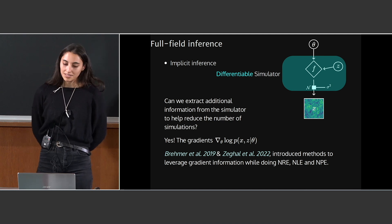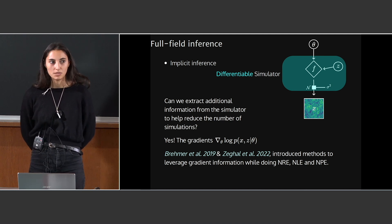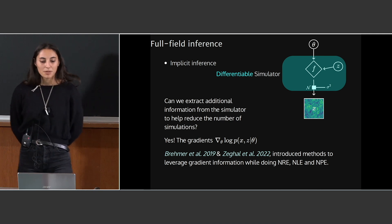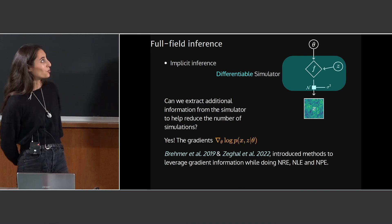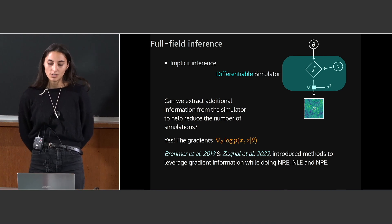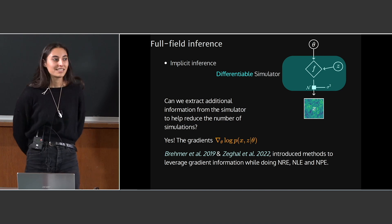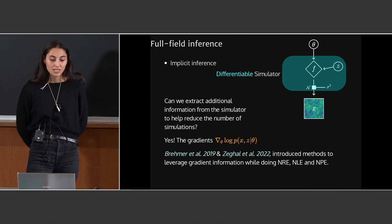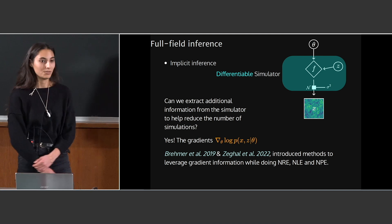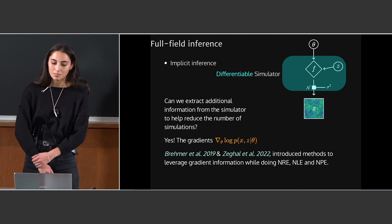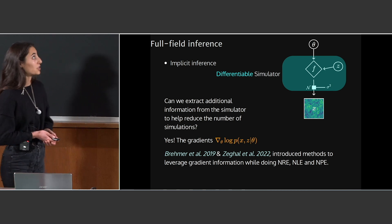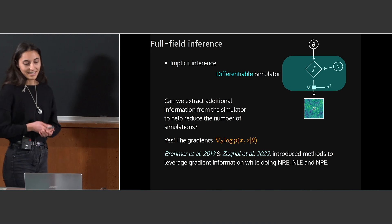Recent works introduced methods to leverage this gradient information to recover the posterior with fewer simulations. But we have a problem because this gradient is not the marginal one. It depends on the latent variable from your simulator, meaning it's stochastic. Depending on the noise level of your gradients, it will more or less help to reduce the number of simulations. It's not simple to know in advance if it will help or not.